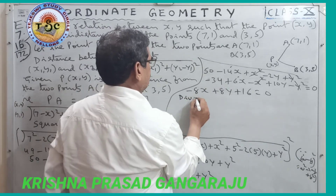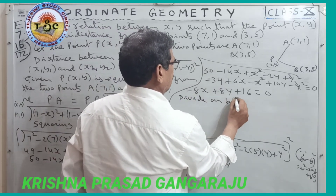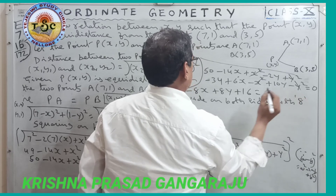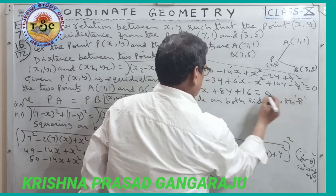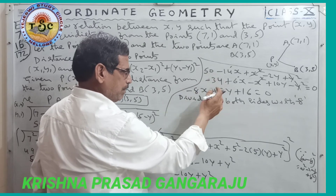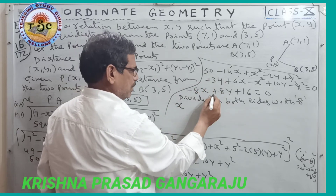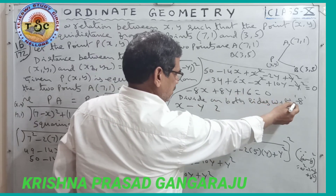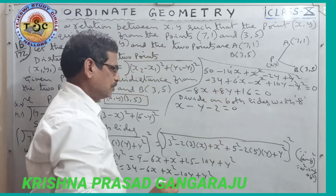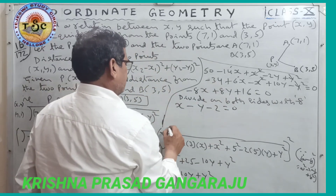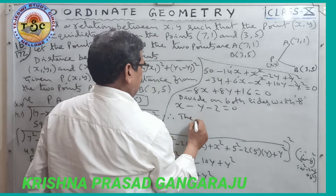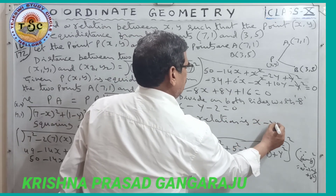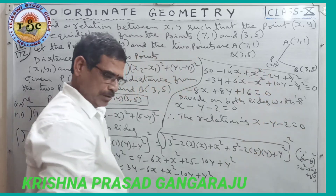Dividing both sides by minus 8, we get x minus y minus 2 equals 0. Therefore the relation is x minus y minus 2 is equal to 0. This is the final answer.